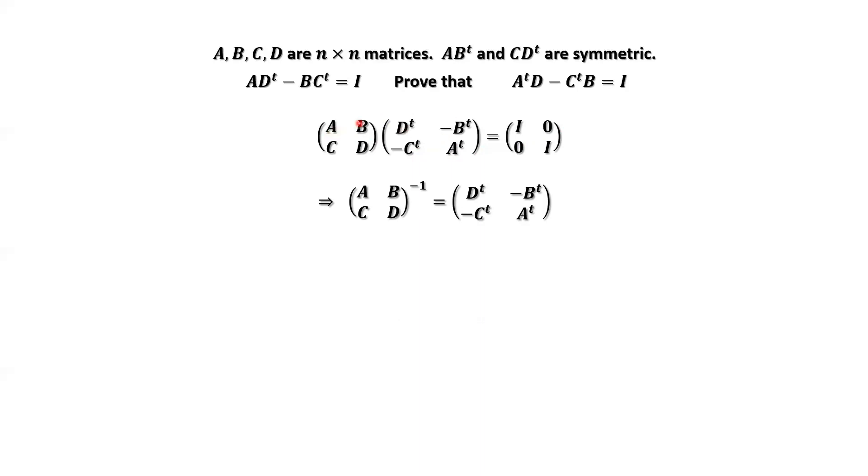This means A, B, C, D, the new matrix, its inverse equals this. That means the product, they can switch the order. And we have the same result. Because this is the inverse of this. Inverse times itself equals the identity.